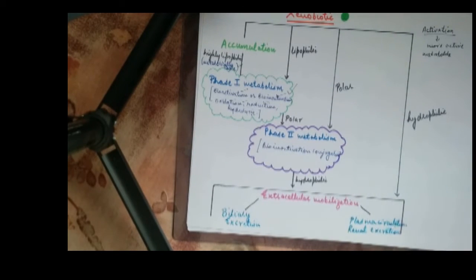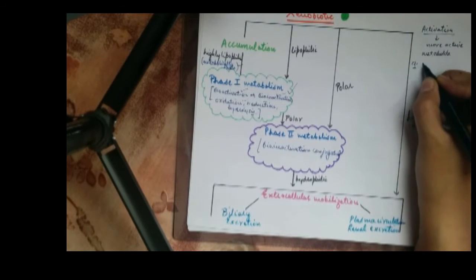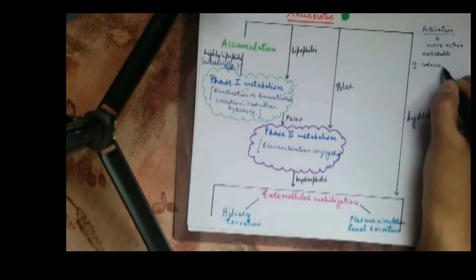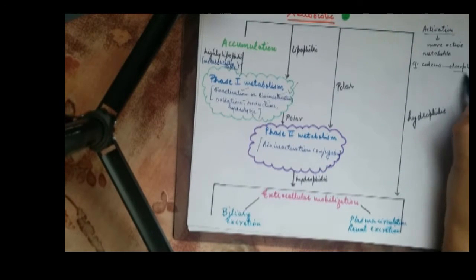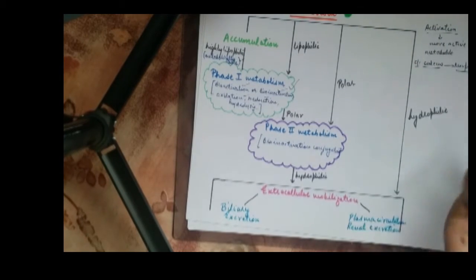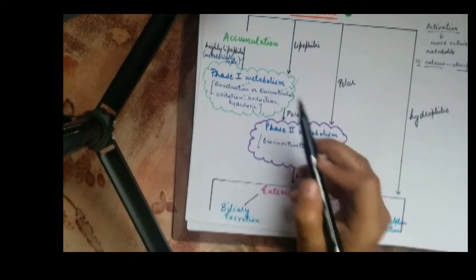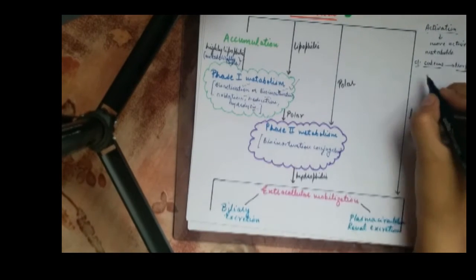Some examples of this activation may include the conversion of codeine to morphine. Here, morphine is more active than the parent compound, codeine. On the other hand, bioinactivation means the active drug is converted to a less active or inactive metabolite.